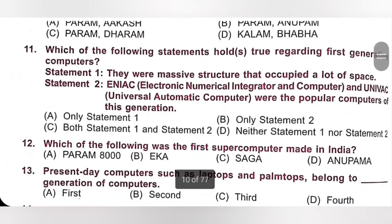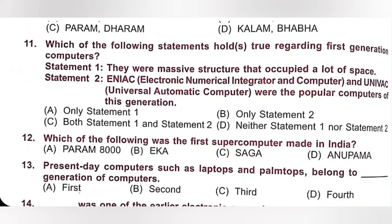Question 11: Which of the following statements hold true regarding first generation computers? Statement 1: They are massive structures that occupied a lot of space — this is correct. Statement 2 is also correct regarding the first generation computer. So — A. Only statement 1, B. Only statement 2, C. Both statement 1 and 2, D. Neither. Both statements 1 and 2 are true regarding first generation computers. Option C is the correct answer.